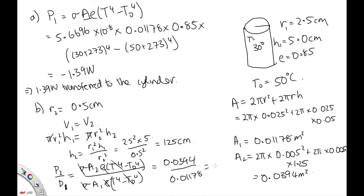a2 is 0.0394 over 0.01178. That's our a1. And so solving that, we end up with 3.34. So cylinder 2, the long skinny one, loses heat about 3.34 times as quickly as cylinder 1, the short stubby one.